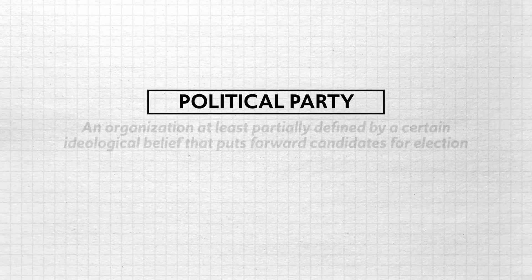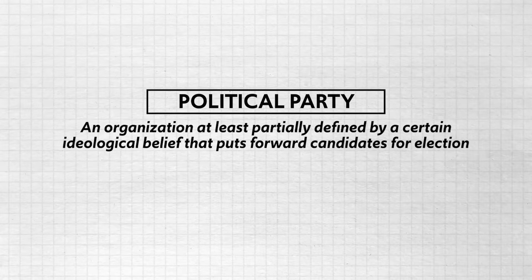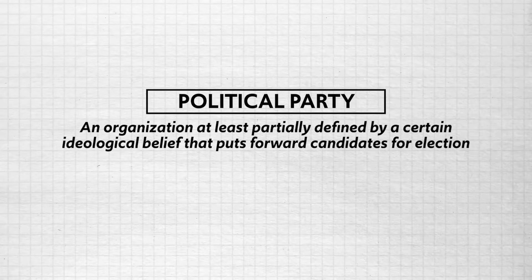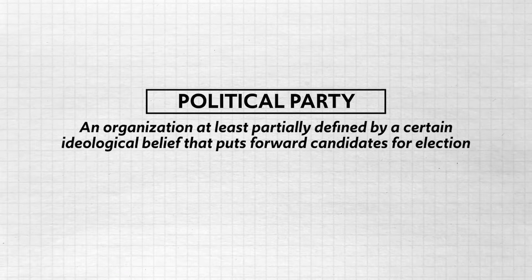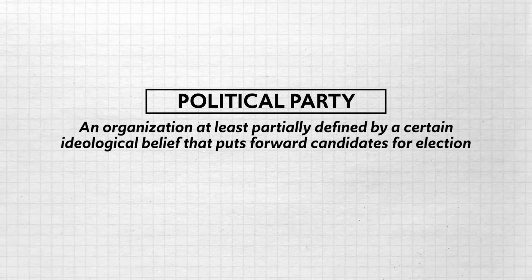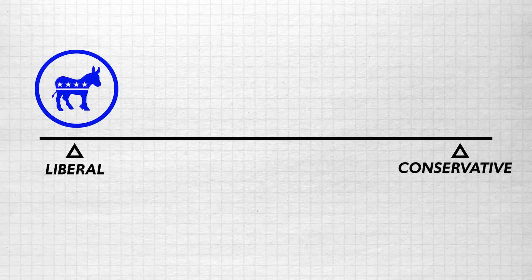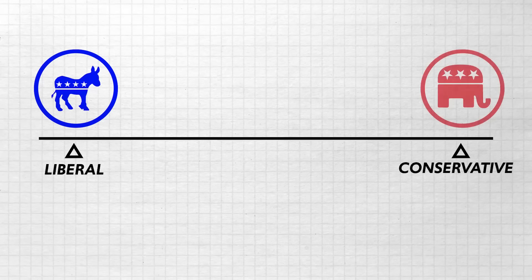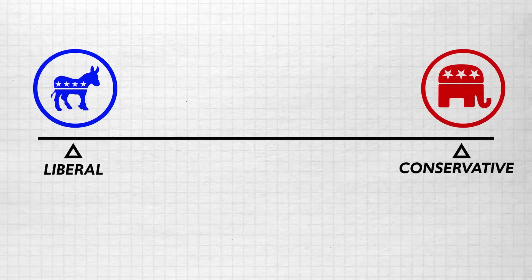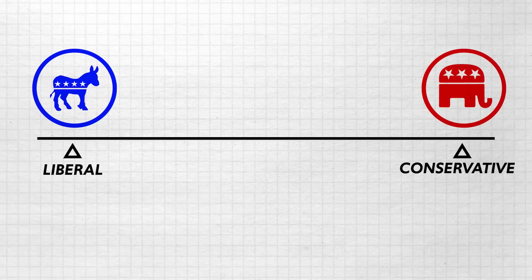So what is a political party? It's pretty simple. A political party is an organization at least partially defined by a certain ideological belief that puts forward candidates for elections. The Democratic Party represents the more liberal ideology while the Republican Party represents a more conservative ideology.